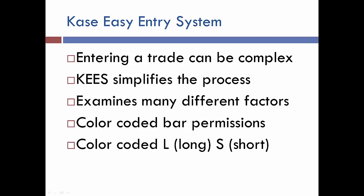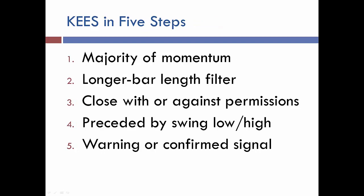The KCZ Entry System, or KEYS for short, simplifies this process. KEYS looks at a lot of different factors in the background and then distills all of those into color coded bar permissions and color coded long and short signals on the chart as L's and S's. KEYS does this in five steps. It starts by looking at a majority of momentum, which means KEYS is actually looking at three different momentum indicators in the background and deciding whether or not those momentum indicators are permissioned long or permissioned short.